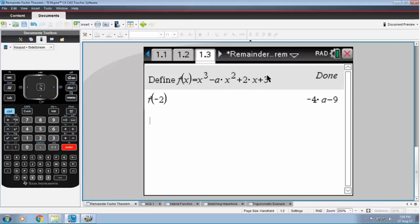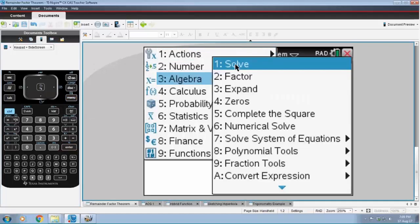So substituting X as minus 2 into that expression gives me minus 4A minus 9. So what I really want to do now is to solve for the value of A when the remainder is equal to 3. So menu, algebra, solve.